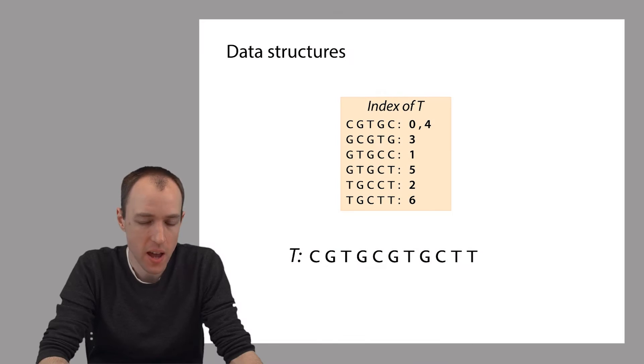We discussed how to build and query a k-mer index, an index that's built by taking all the k-mers of the text T and adding them to a data structure that maps each k-mer to a list of all the offsets where it occurred in the text. So this kind of data structure is called a multi-map.